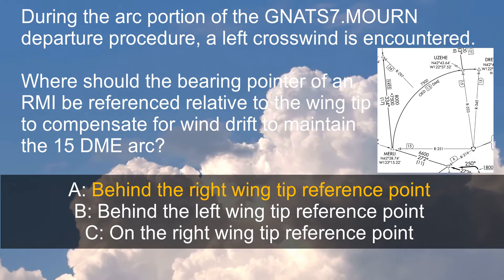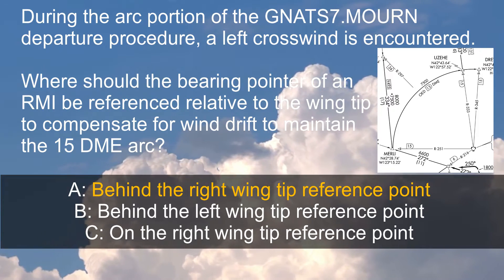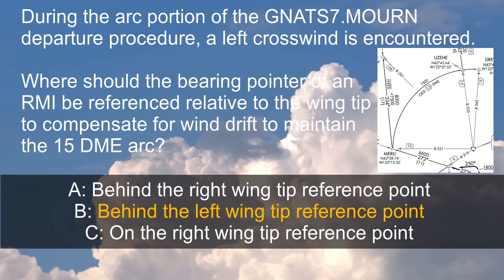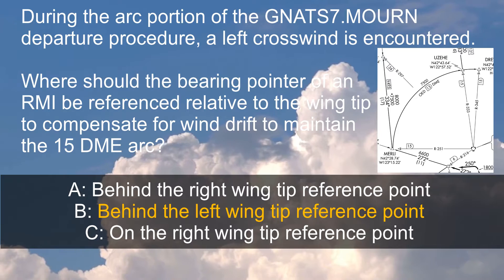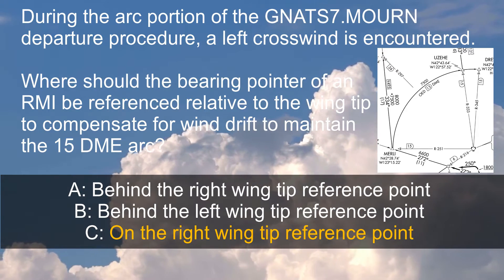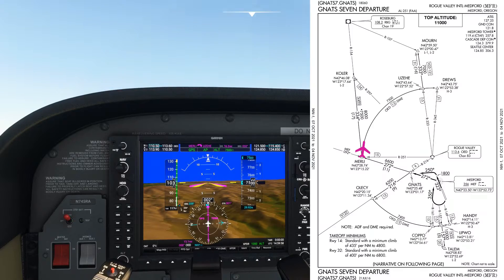A: Behind the right wingtip reference point. B: Behind the left wingtip reference point. Or C: On the right wingtip reference point.